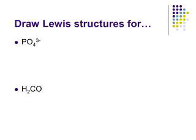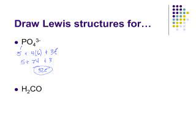Let's look at the phosphate ion. There are actually multiple structures that can be drawn for phosphate, but we're going to draw one that obeys the octet rule. Phosphorus is in group 15, so it has five valence electrons. We have four oxygens at six each, and an extra three electrons, so four times six is 24, plus five, plus three — that gives us 32 electrons altogether. I'm going to put the phosphorus in the middle and the oxygens outside, since I have one phosphorus and multiple oxygens.